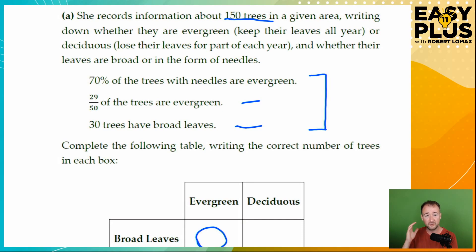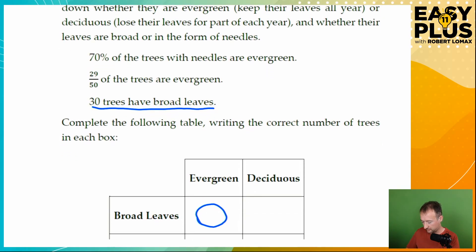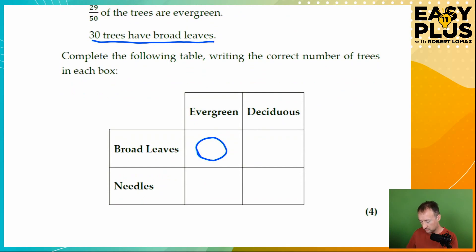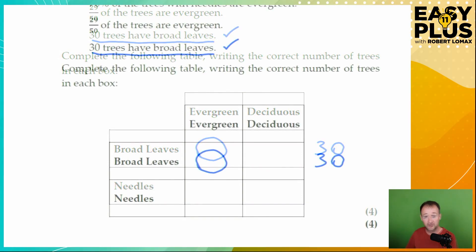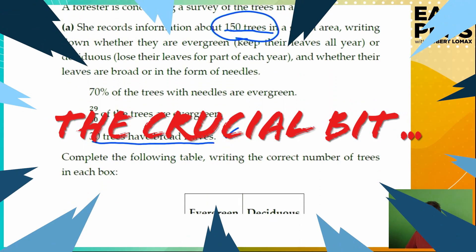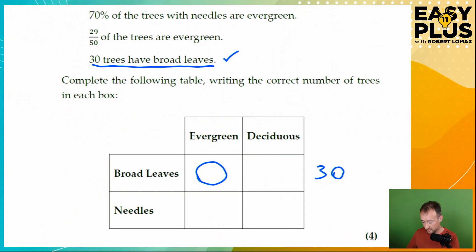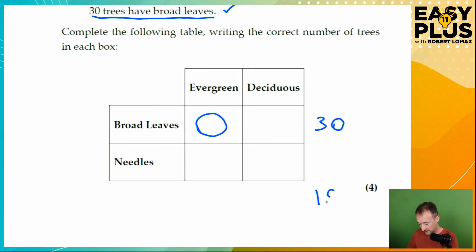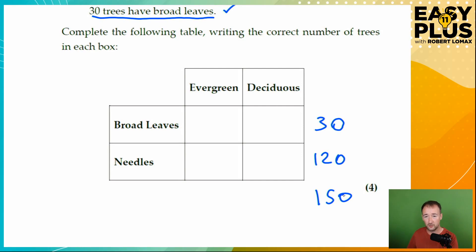The first thing we do is start filling in what we do know. We know that 30 trees have broad leaves, so we write that on the right of the table. There are 150 trees in total, so the number of broad-leaved trees plus the number of trees with needles must add up to 150. That means there must be 120 trees with needles, because 30 plus 120 equals 150.